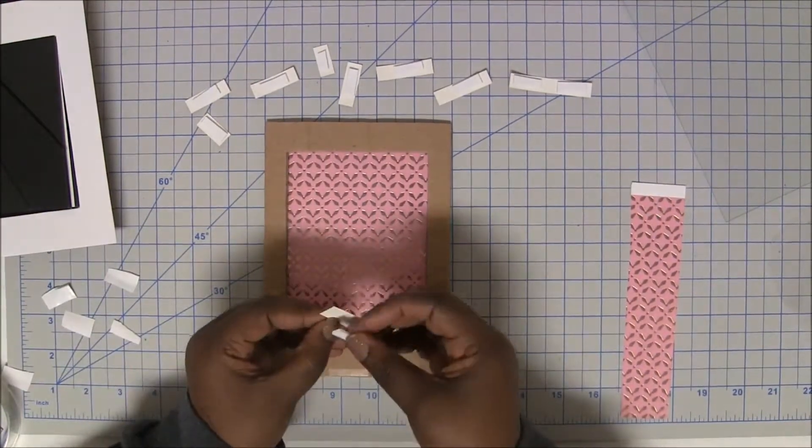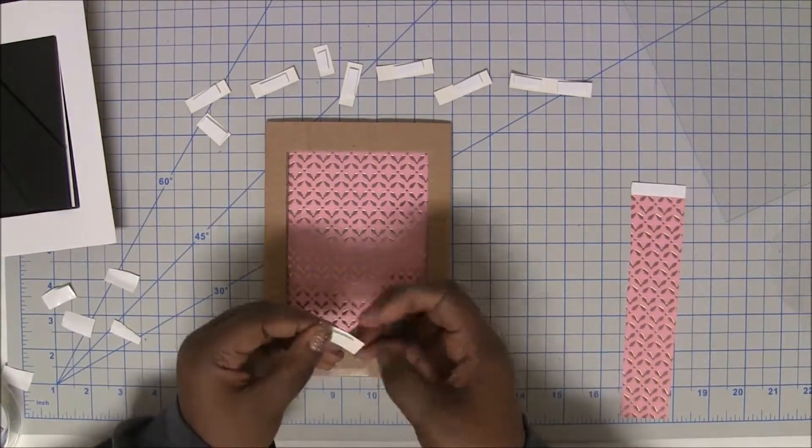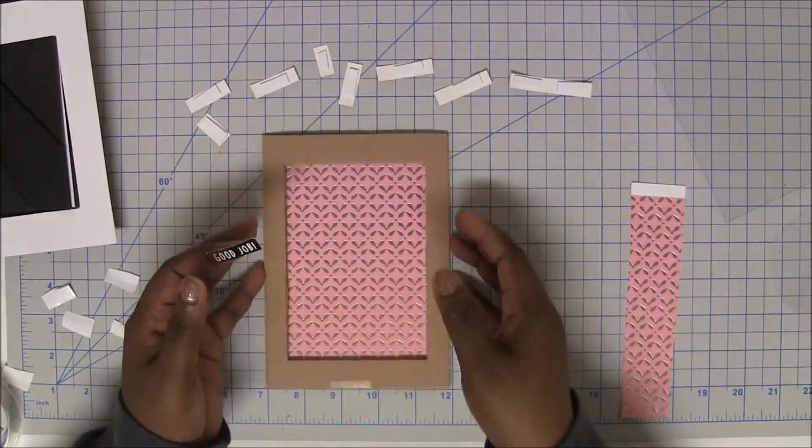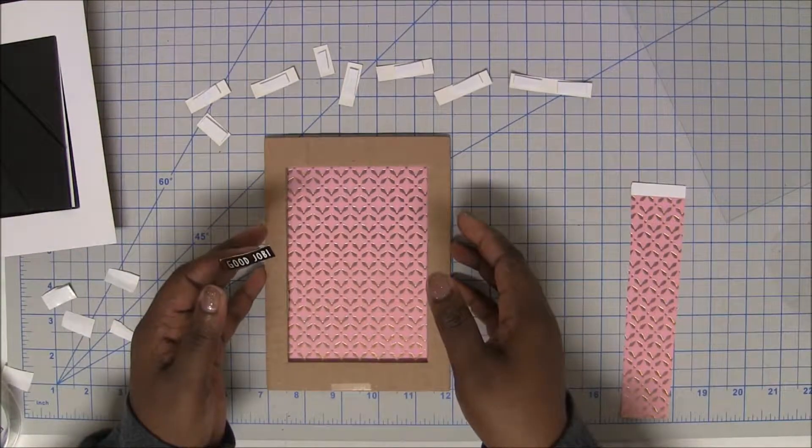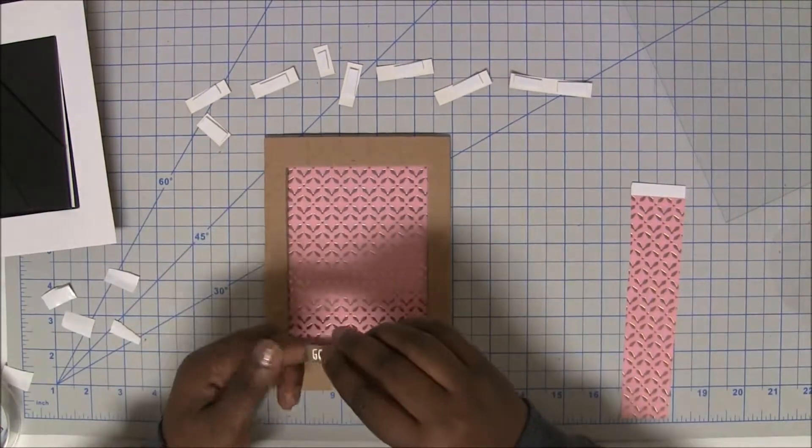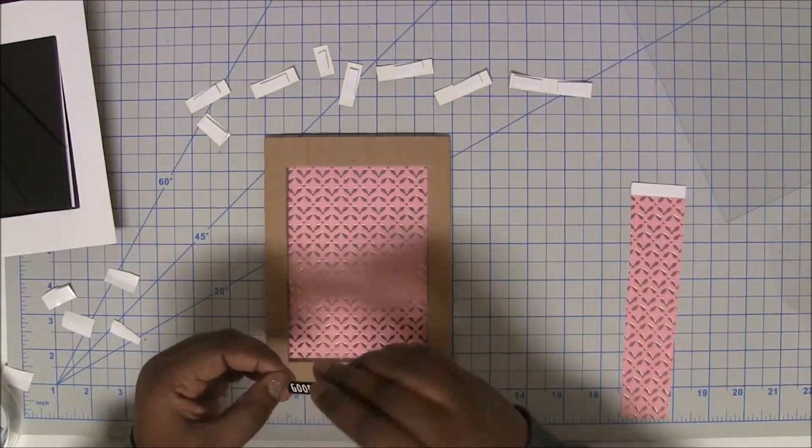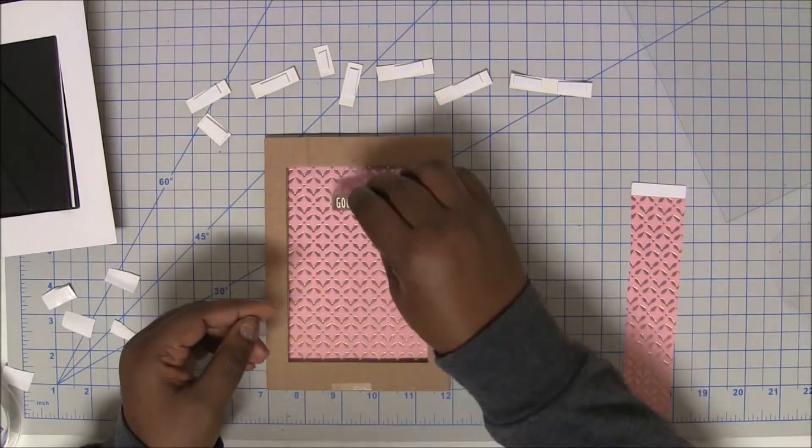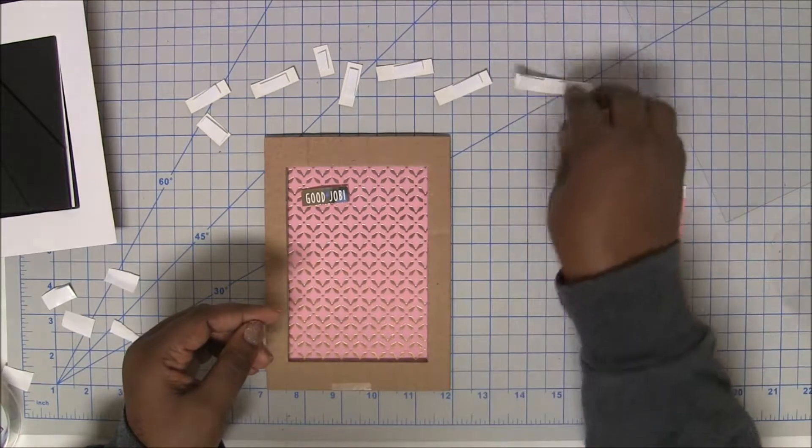All right. So once you have all your stickers on, then I would say go ahead and line them up on your mat, inside your frame, the way you want them.